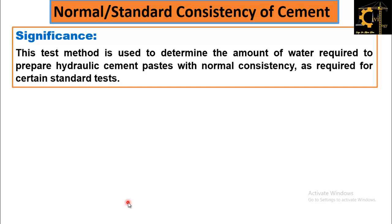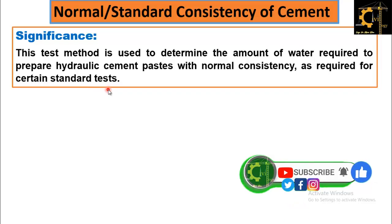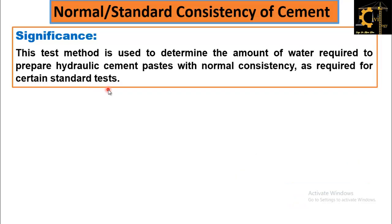First of all, what is its significance? Why do we need to find the consistency of cement? This test method is used to determine the amount of water required to prepare hydraulic cement paste with normal consistency as required for certain standard tests. This test is basically performed to determine the amount of water required for cement to complete its hydration process to make a consistent paste.